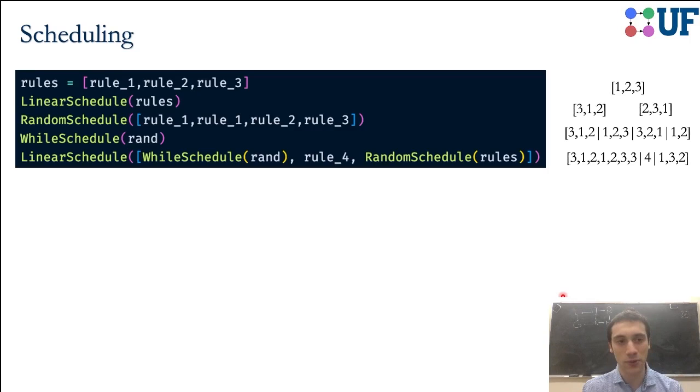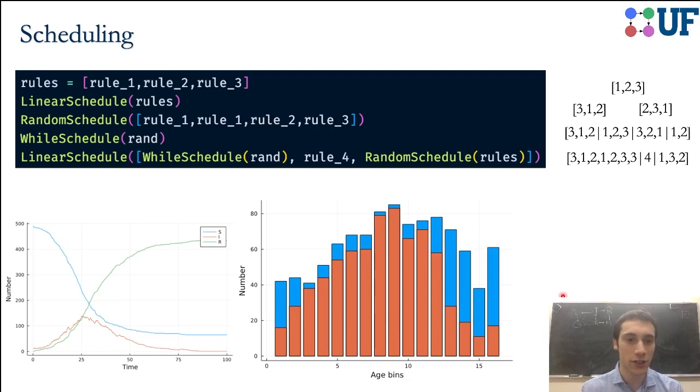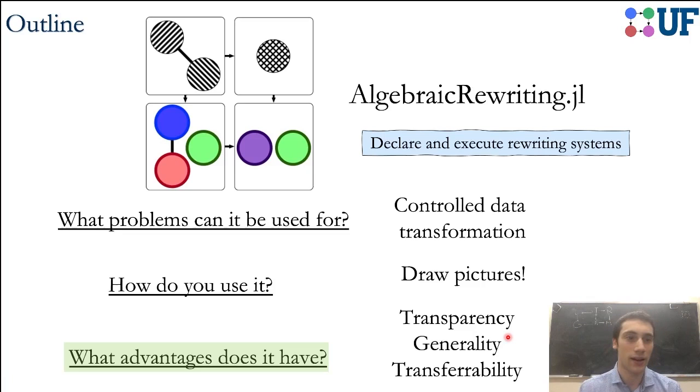I'll talk briefly about scheduling, which is that right now we support executing rules in a particular order, in a random order, executing them until there are no further changes. You can also do this hierarchically. This is something that we exploited to do an epidemiological simulation, where we have different age groups interacting at different frequencies, and those interaction constants were chosen from real data. We could see things like, oh, the elderly don't interact with working age people as much, so they're not going to have as high of a total infection rate. This is the value of doing more realistic simulations by controlling how frequently these rules get executed.